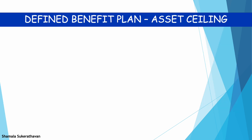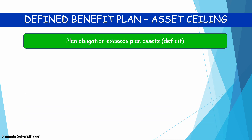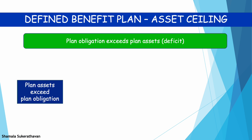Most defined benefit plans are in deficit, meaning the plan obligation exceeds the plan assets. However, it is possible for plan assets to exceed the plan obligation. In such a situation, IAS 19 stipulates an entity shall apply an asset ceiling — that is, the surplus is measured at the lower of: